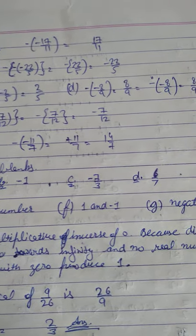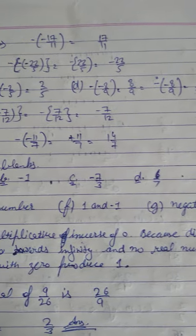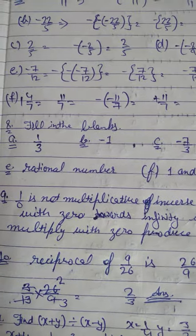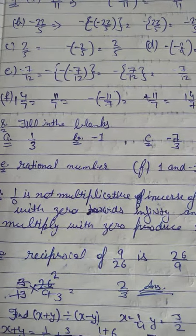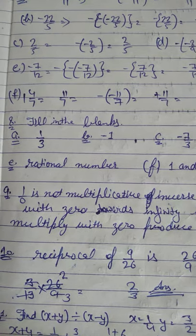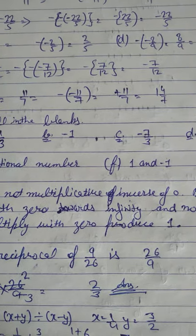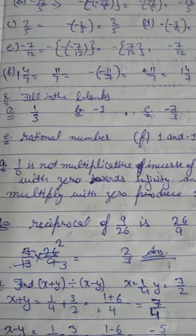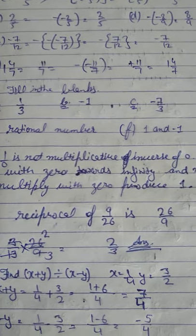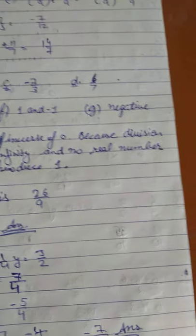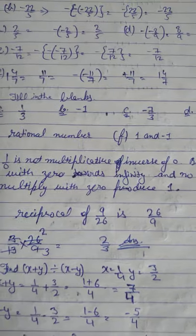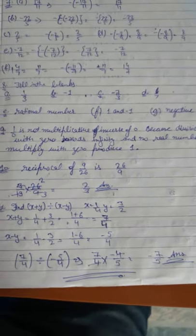All parts of sum 7 are solved and clearly visible. In the eighth sum we fill in the blanks — the answers for blanks a, b, c, d, e, f, and g are shown in the answer key.